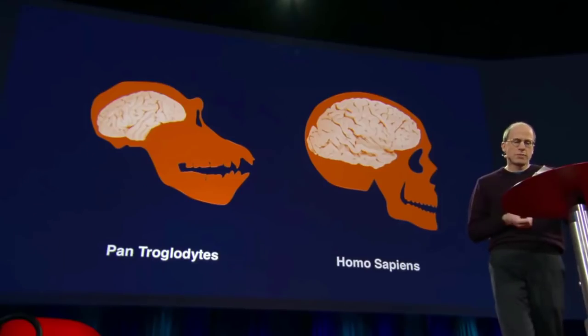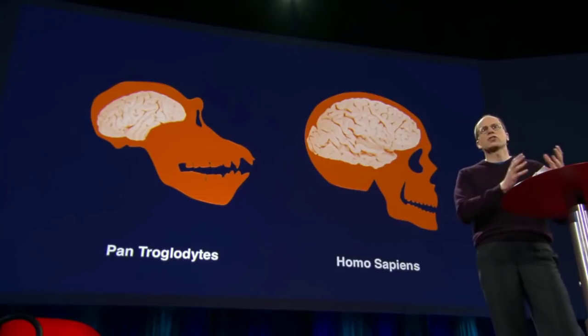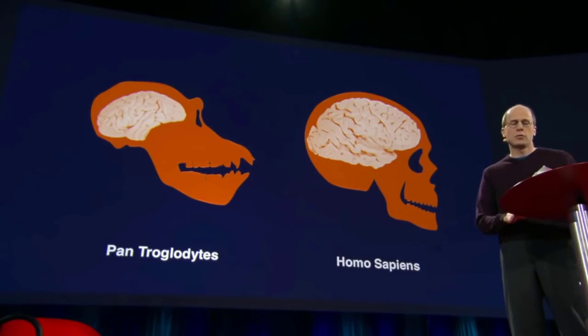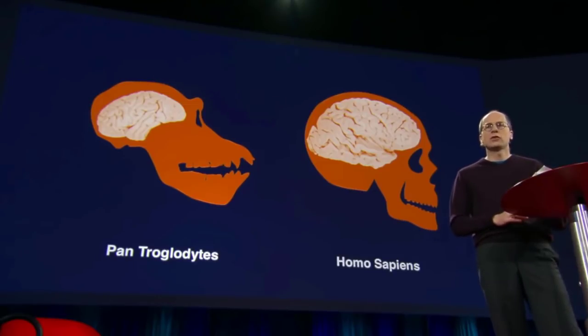A paradigm shift has taken place in the field of artificial intelligence. Today the action is really around machine learning. So rather than hand crafting knowledge representations and features, we create algorithms that learn, often from raw perceptual data, basically the same thing that the human infant does. The result is AI that is not limited to one domain. The same system can learn to translate between any pairs of languages or learn to play any computer game at the Atari console. Now, of course, AI is still nowhere near having the same powerful cross domain ability to learn and plan as a human being has. The cortex still has some algorithmic tricks that we don't yet know how to match in machines.